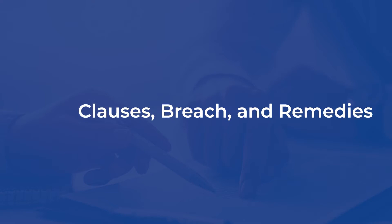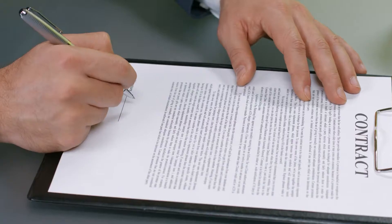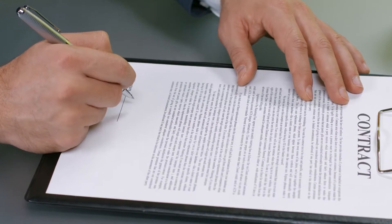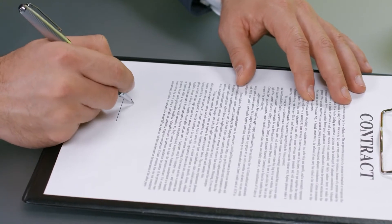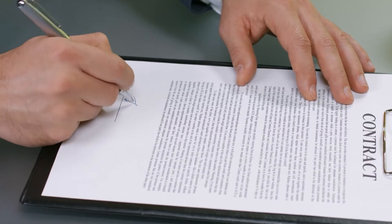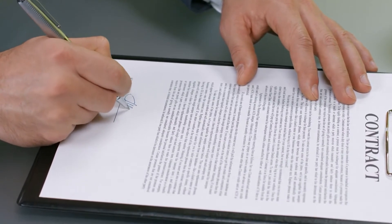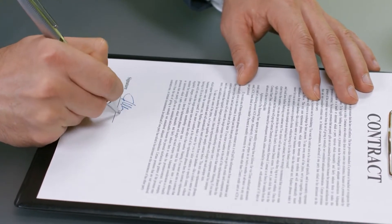Those are the basic elements of a contract, but it's said the devil is in the details. In this case, that means the clauses that make up a contract. This section of the lesson will first focus on many of the clauses that can and often do make up a real estate contract.